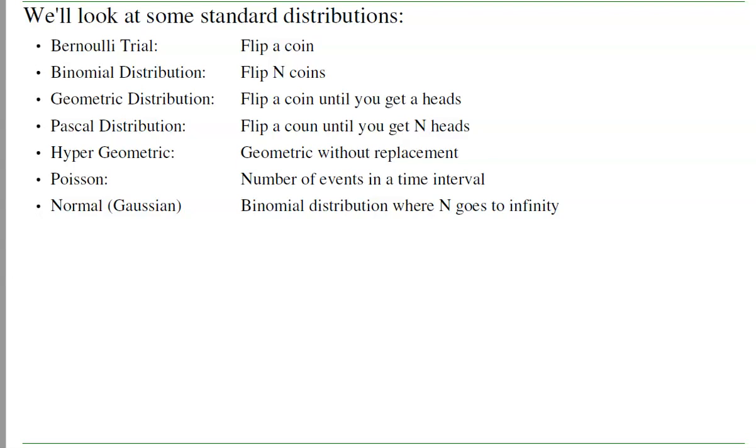Poisson. Number of events in a time interval. And the most important one would be a normal distribution. That's the binomial distribution as n goes to infinity.